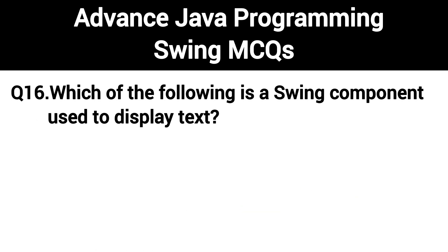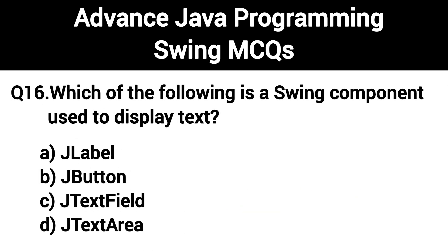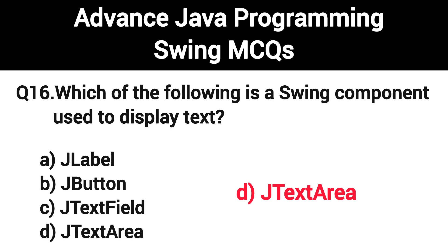Q16. Which of the following is a Swing component used to display text? The right answer is Option D: JTextArea.